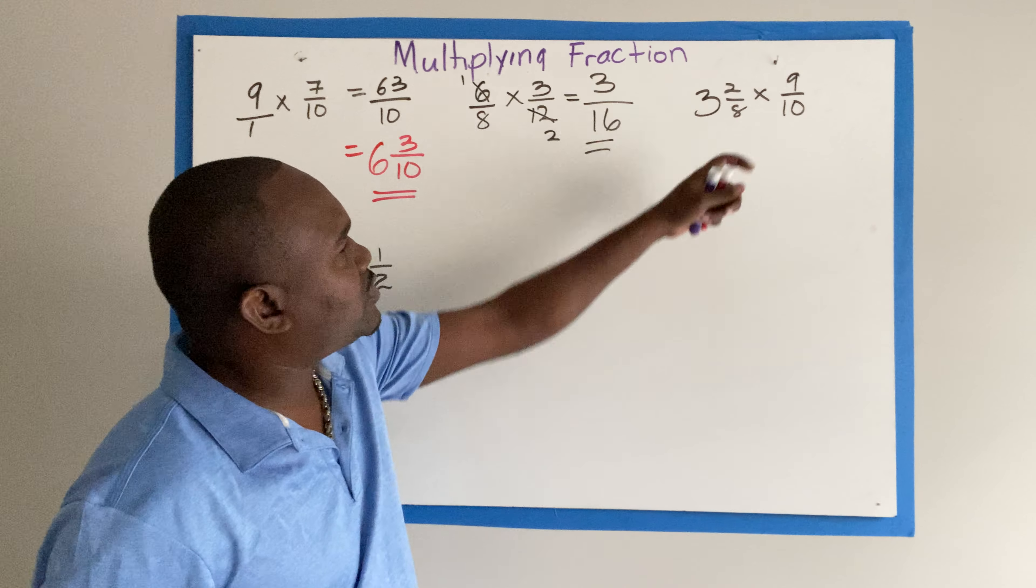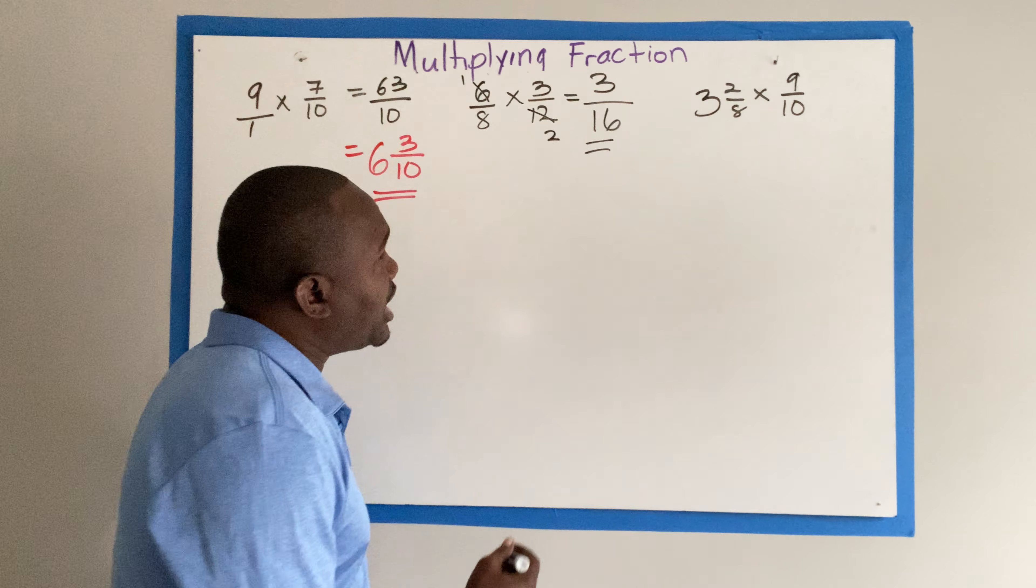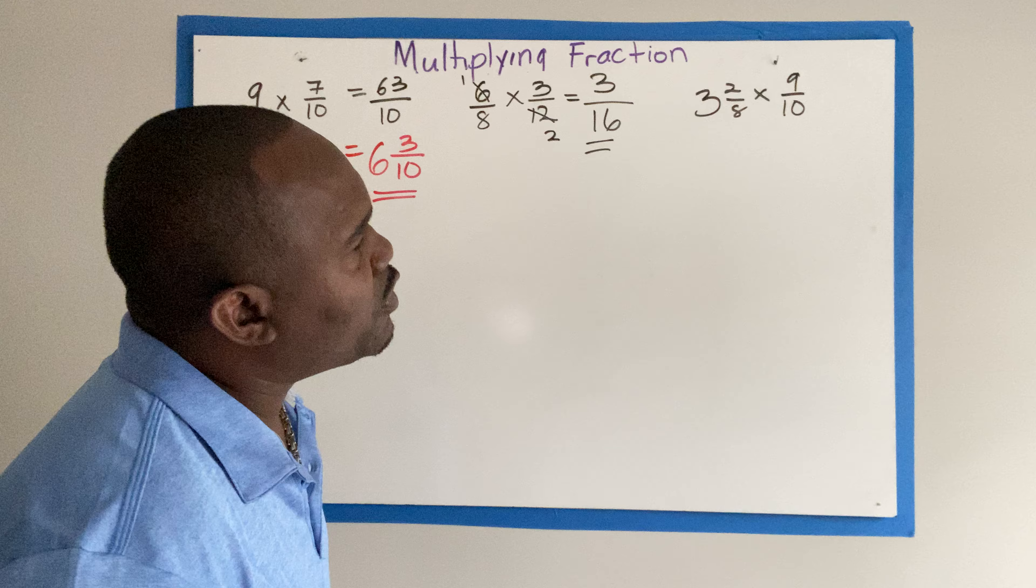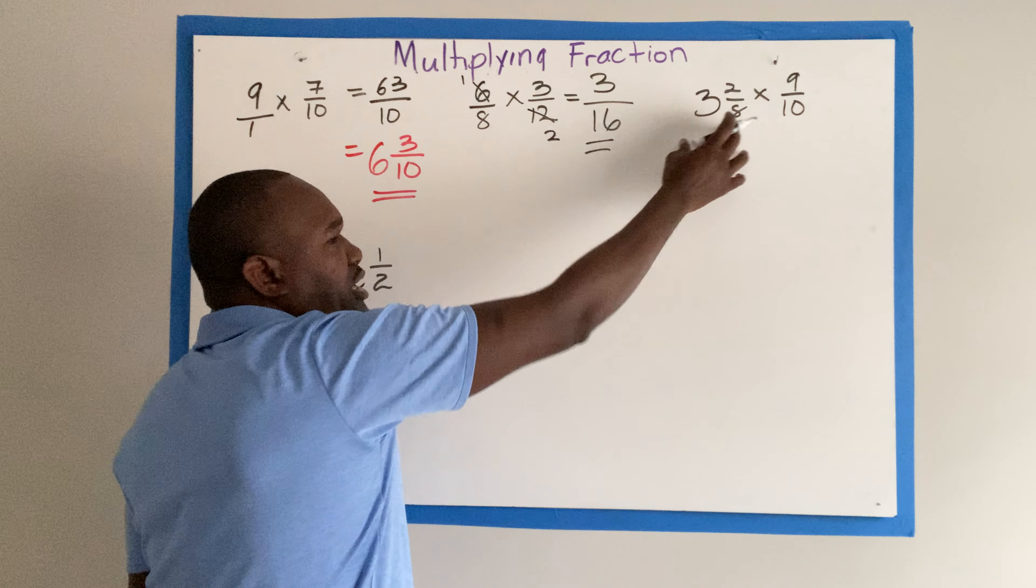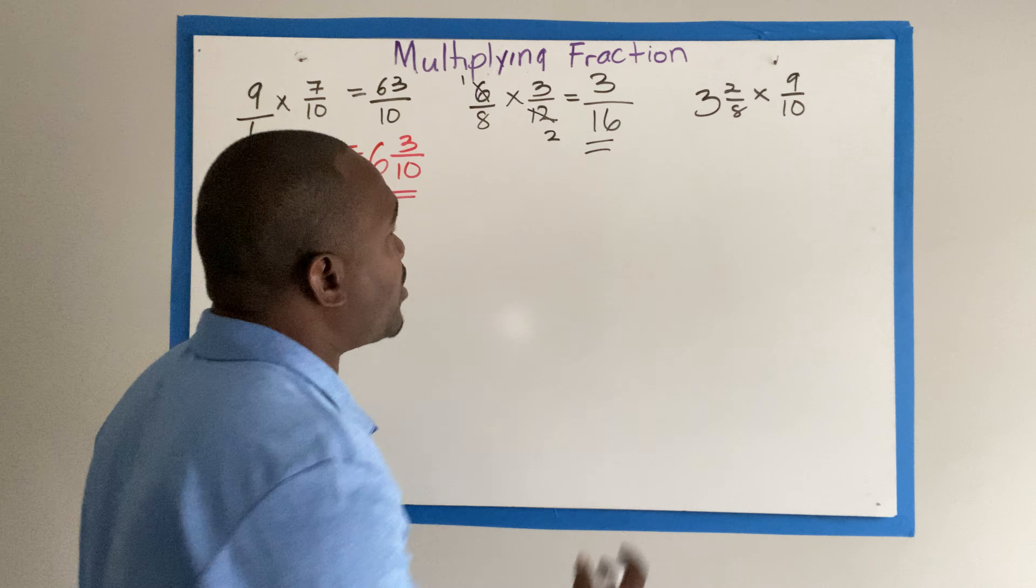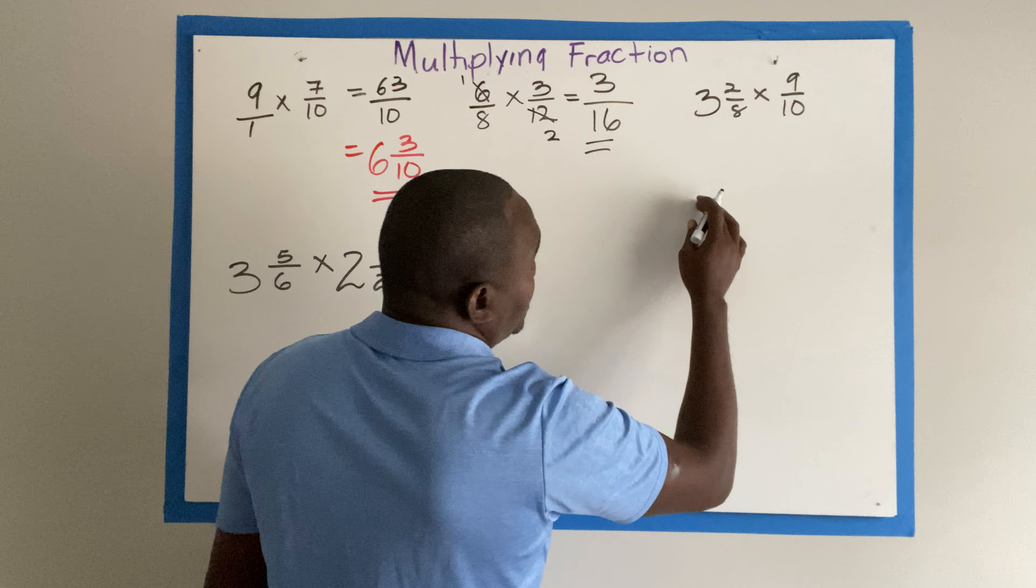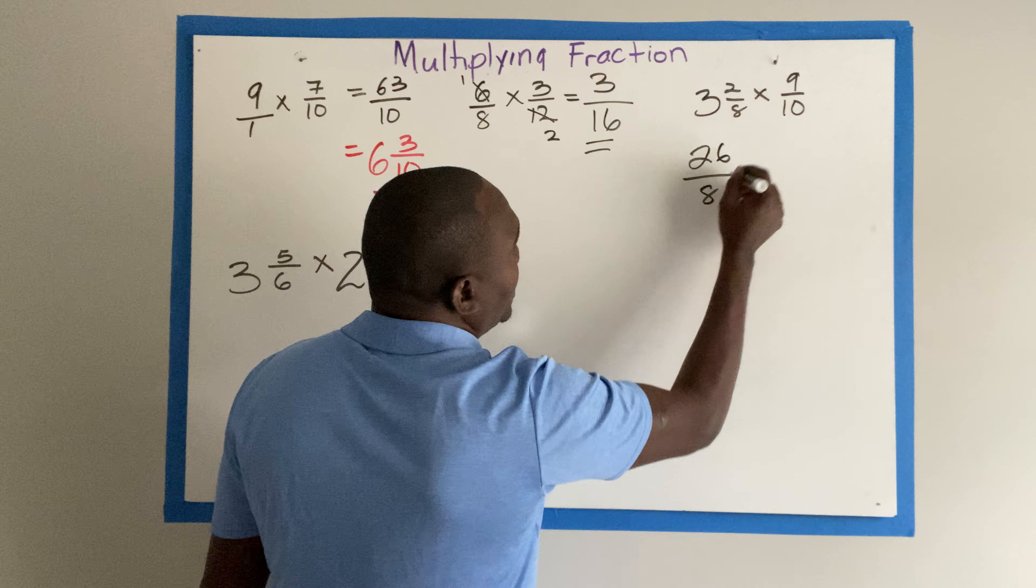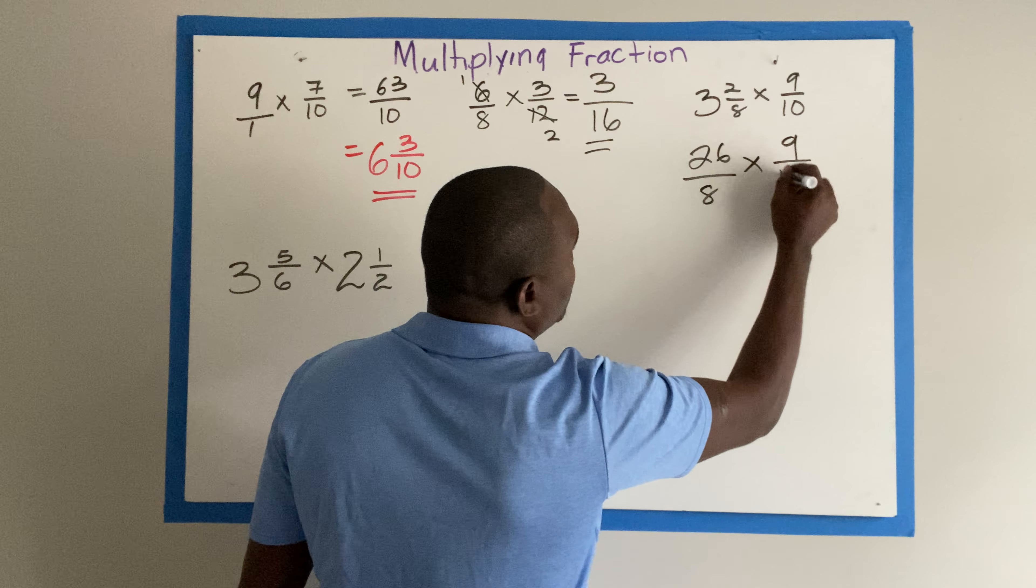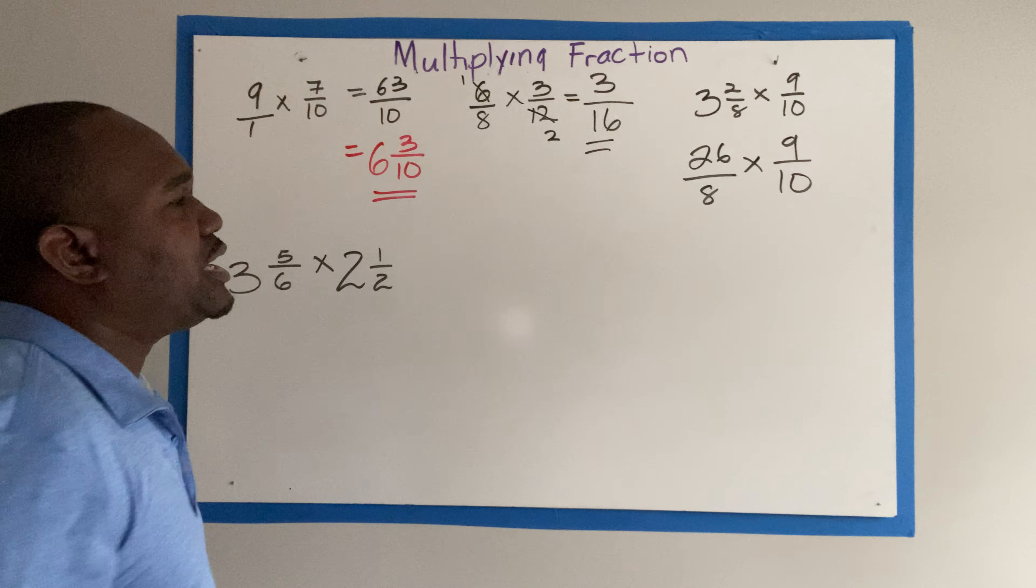Now let's look at this one. 3 and 2 over 8 times 9 over 10. So we change this mixed fraction to an improper fraction. 8 times 3, that's 24 plus 2 will give us 26 over 8 times 9 over 10. Then we check for cancellation.